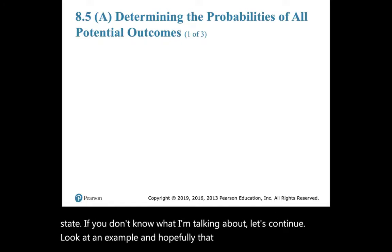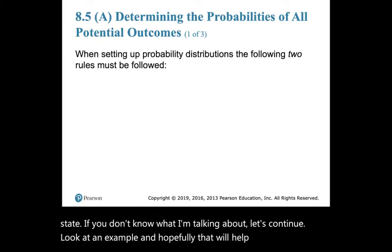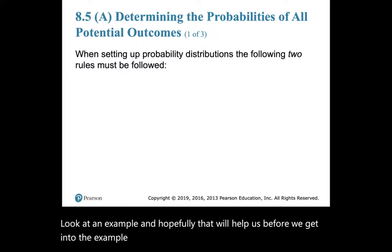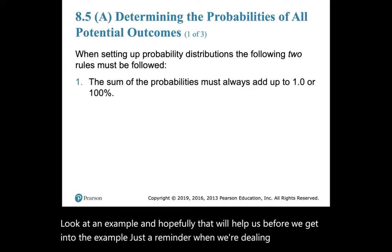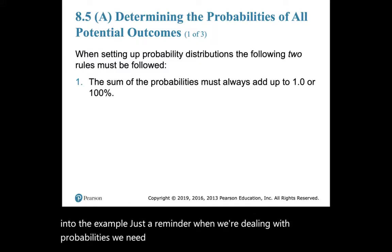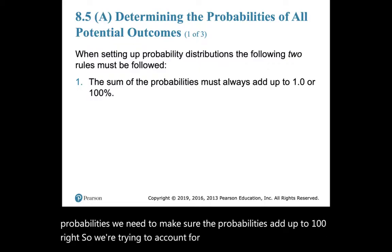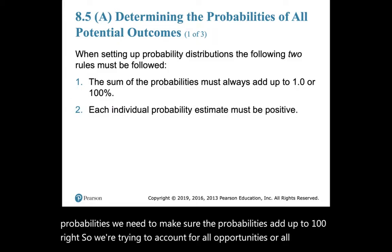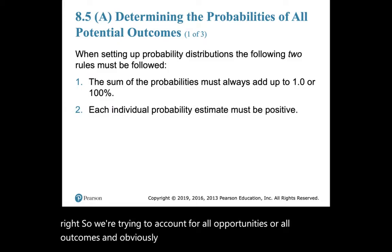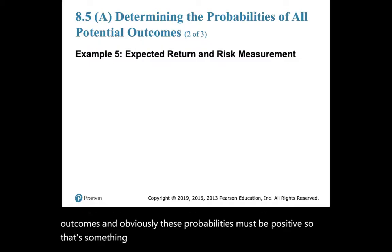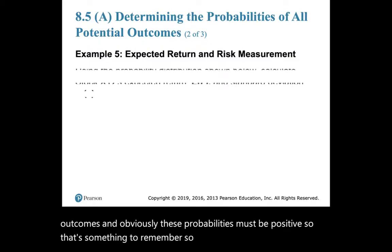Before we get into the example, just a reminder: when we're dealing with probabilities, we need to make sure the probabilities add up to 100%. We're trying to account for all possible outcomes, and obviously these probabilities must be positive.